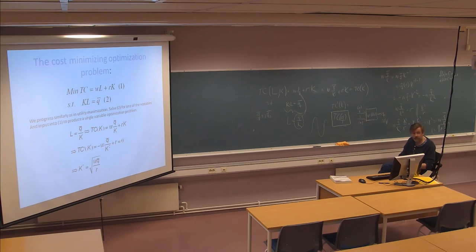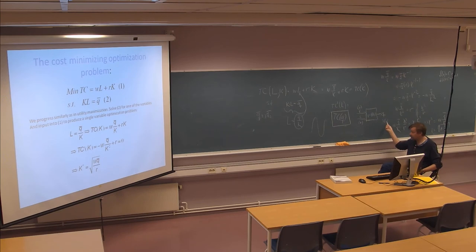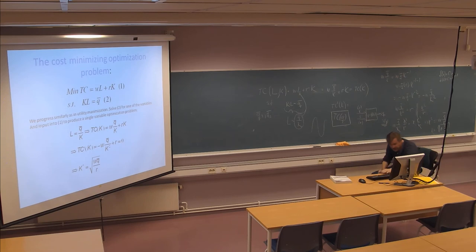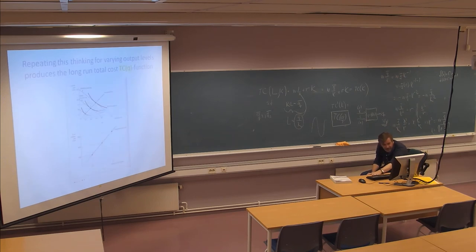We still have not solved the producer's problem. The interesting decision for the producer is how much to produce, and we haven't addressed that yet. We have only established that there exists a total cost function related to output. To decide on how much to produce, we need to discuss the producer's objective — which in classical economic theory is profit maximization. The total cost function is a handy tool for formulating profits, and that is the next step in the next chapter.